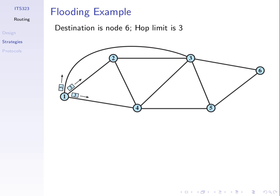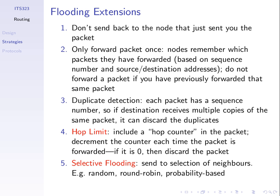The advantage of flooding is it's very simple. There's no concept of calculating routes. We don't need to know about the network topology. Node one just needs to know who are its neighbors - send to your neighbors, and those nodes send to their neighbors, and eventually it gets to node six. Very simple, but very inefficient. The extensions try to make it a little more efficient and reduce the number of packets sent.